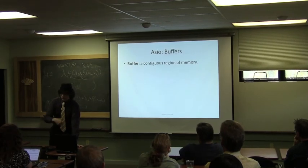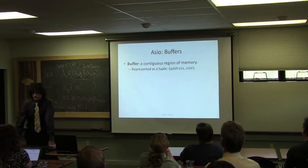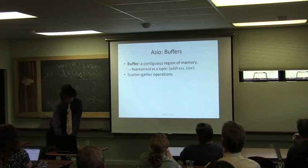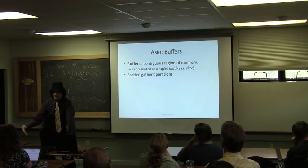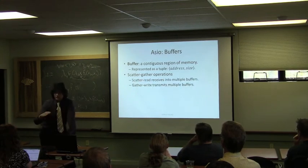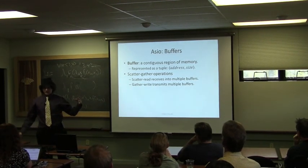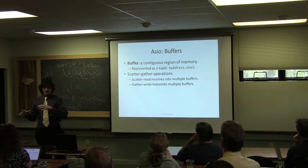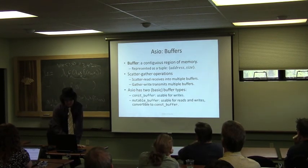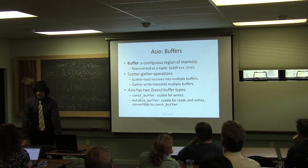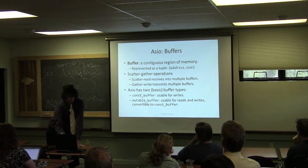Asio buffers are basically a tuple of an address and a size or length. These are how we pass input and output to Asio, which uses scatter-gather operations through the kernel. A scatter read means receiving data into multiple input buffers; a gather write means taking multiple contiguous regions of memory and writing them out to some endpoint. There are two basic buffer types: const_buffer for writes, and mutable_buffer for reads. Mutable buffer is also convertible to a const buffer.